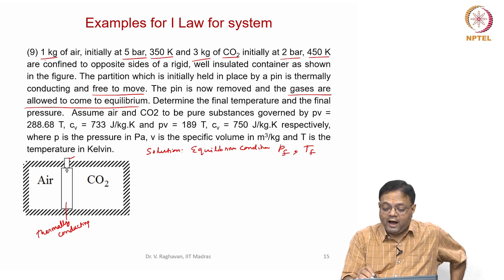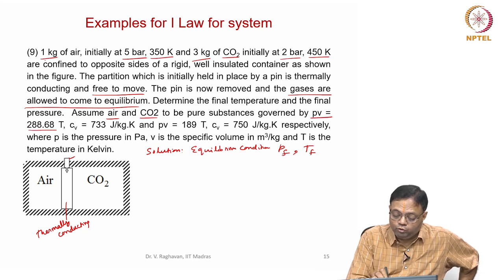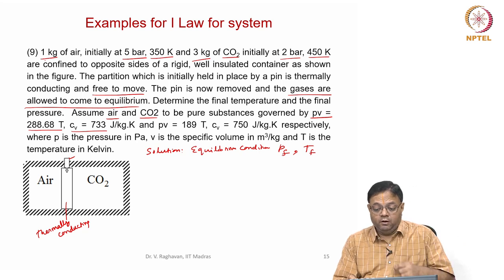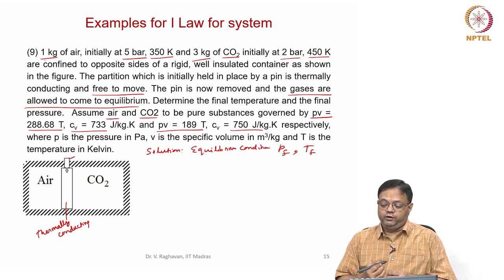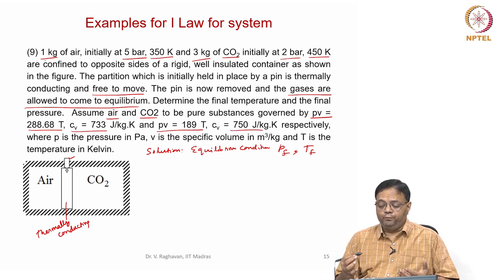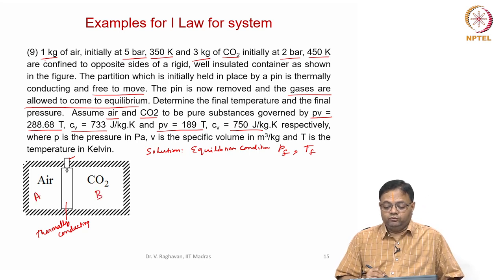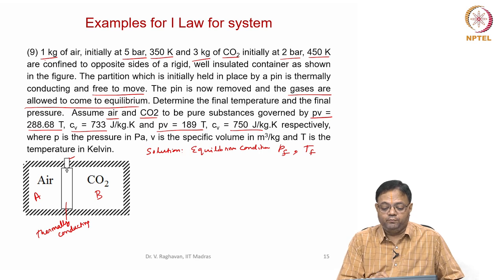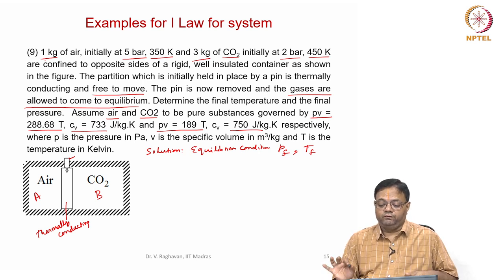Air obeys pV = 288.68T, with Cv = 733. For CO2, pV = 189T and Cv = 750. These are the given equations of state and Cv values for each gas.